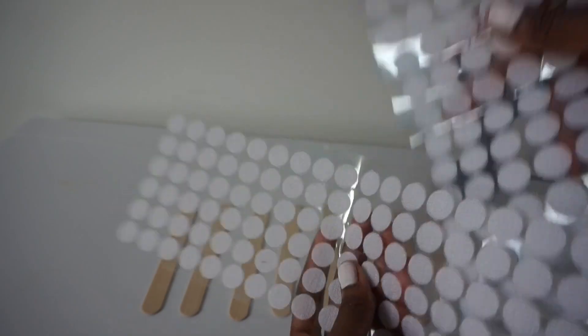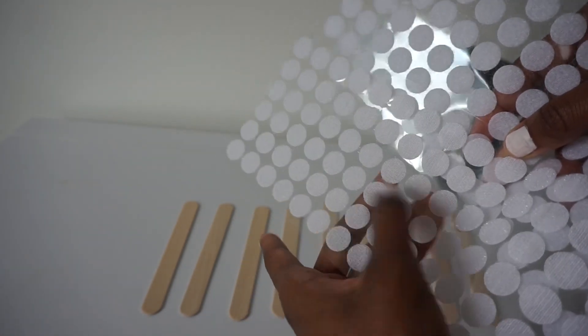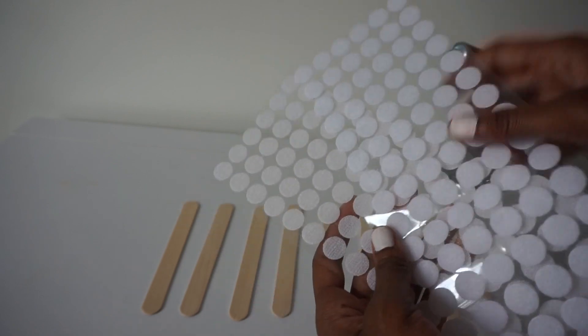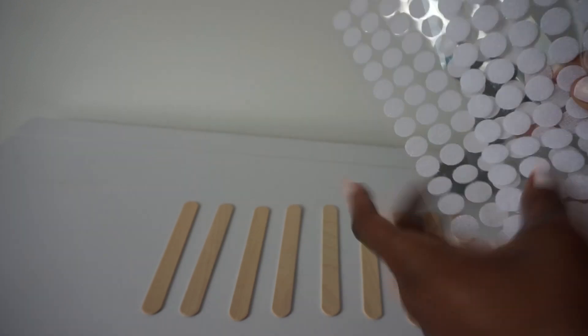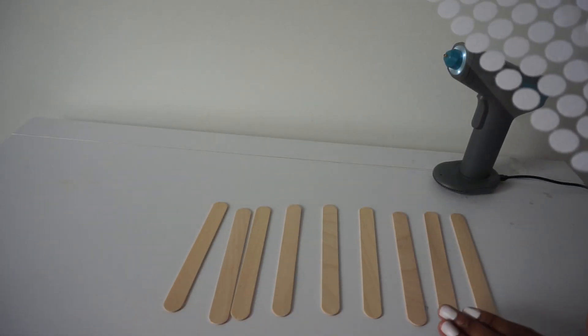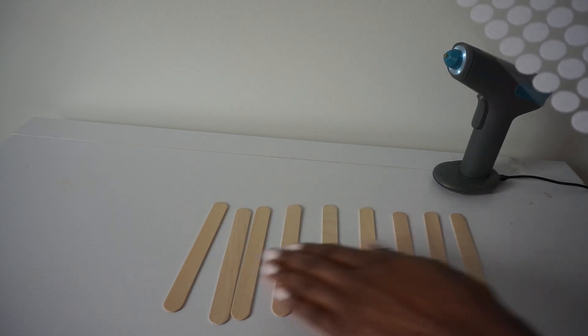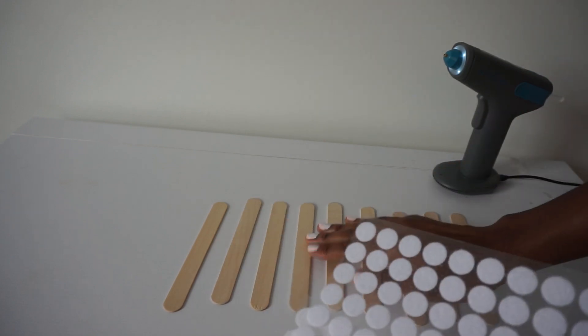There are two sides to velcro dots: you have the rough side which is called the hook side, and then you have the soft side, just kind of like the felt side - this is the loop side. So for each craft stick we're going to put all the hooks on one side and all the loops on the other side. All right, so this is going to be quick and easy, pretty straightforward.